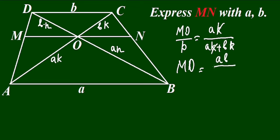And in the same way, NO will equal like that. If you find out MO, it will be ab over a plus b.